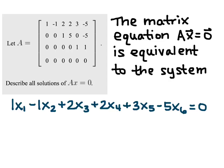That comes from taking the entries of A and using them as coefficients of our variables. So, the matrix equation AX equals zero is equivalent to the system where we take the first row of A and we get 1X1 minus 1X2 plus 2X3 plus 2X4 plus 3X5 minus 5X6 equals zero.